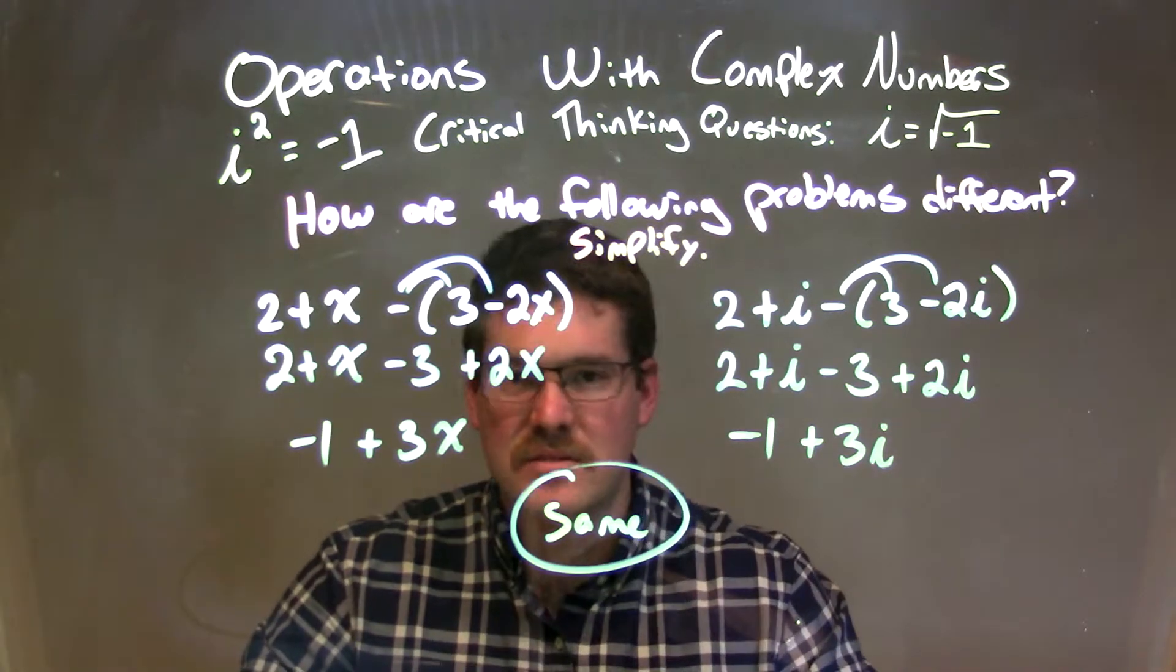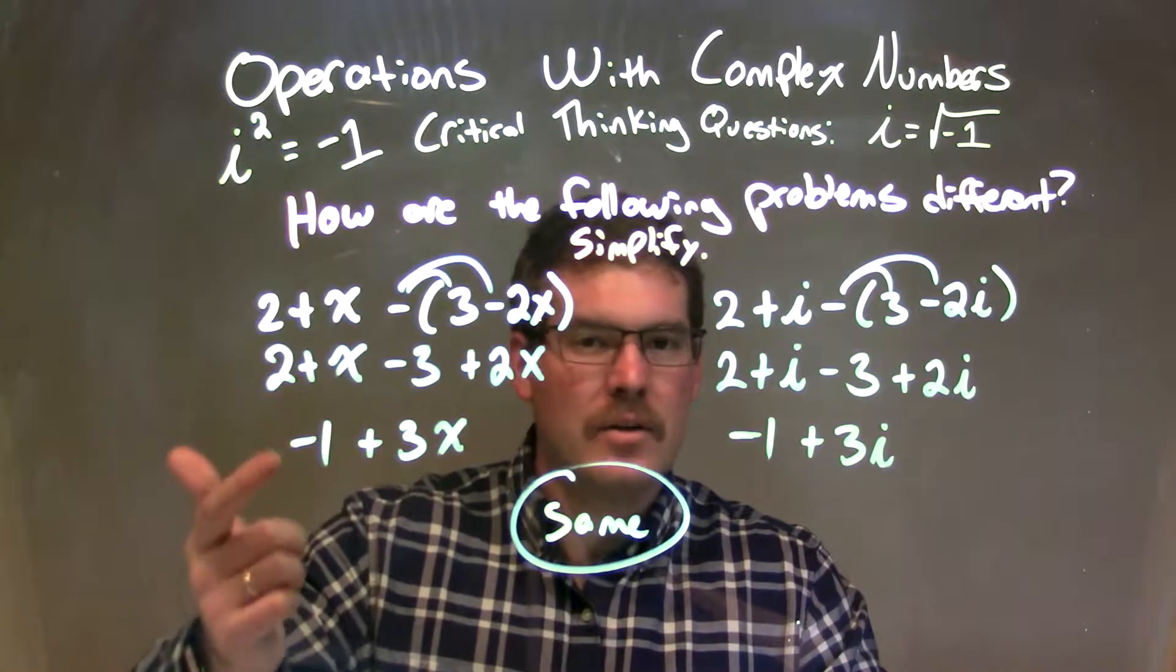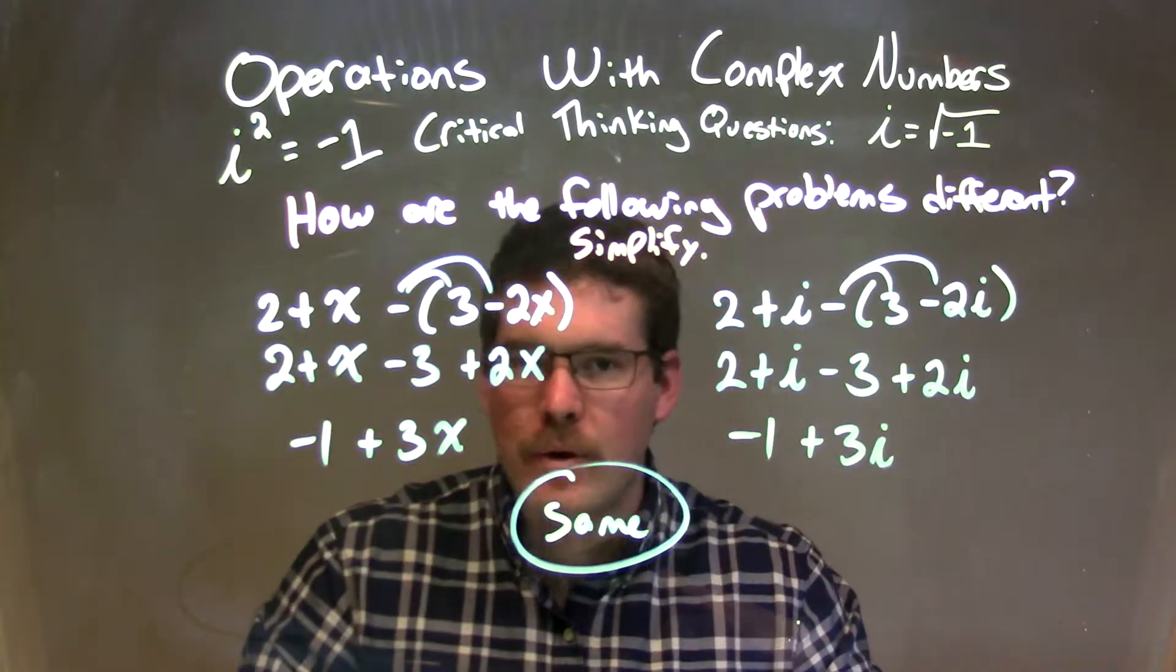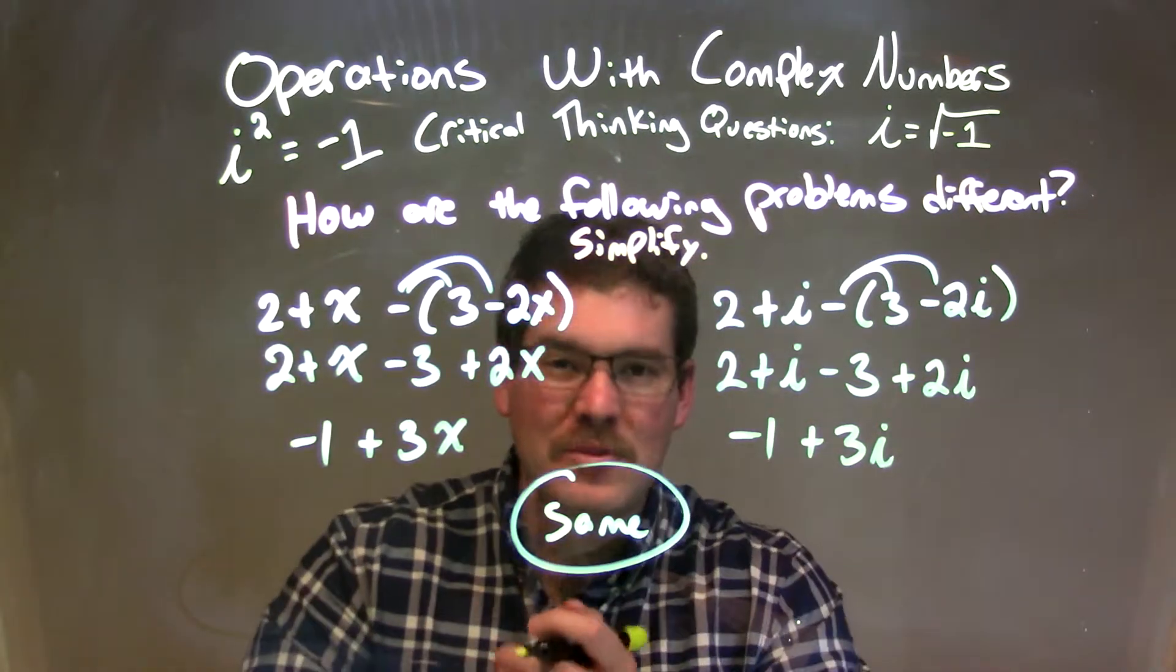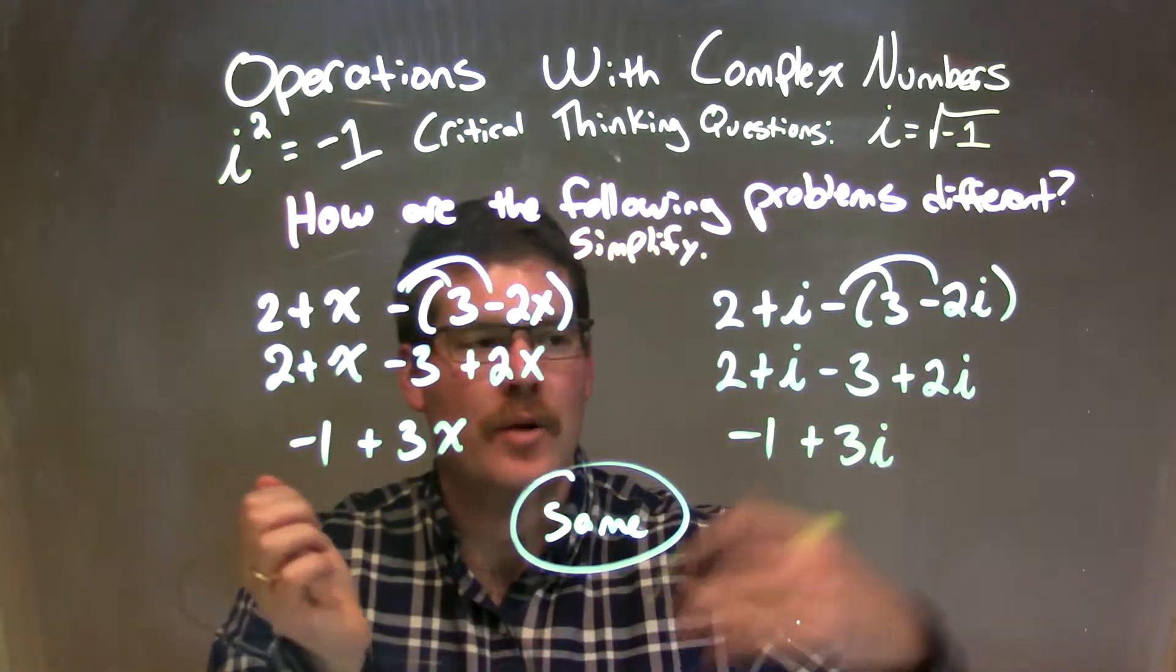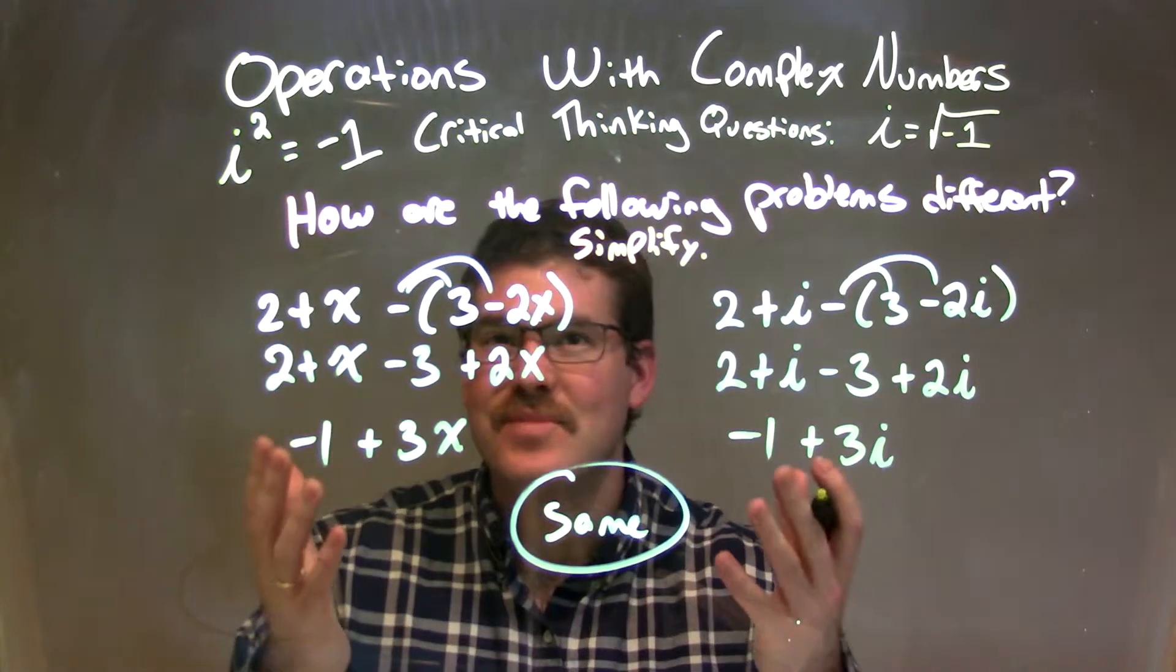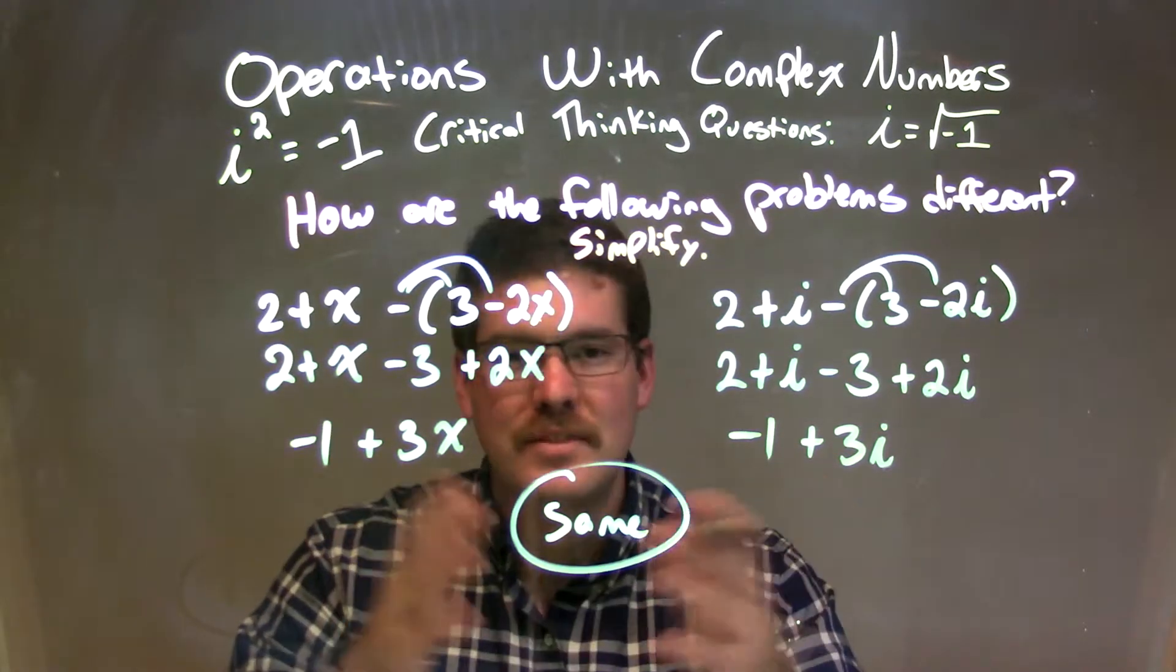At this point, there is nothing else that we can do to simplify and we see that the steps were exactly the same for both of the left and the right one. And our final answer was pretty much the same. Again, the difference being this has a variable and this has an imaginary number. So again, our final answer here is these are really the same, or the same steps at least.